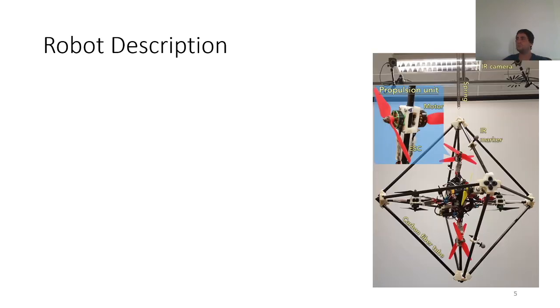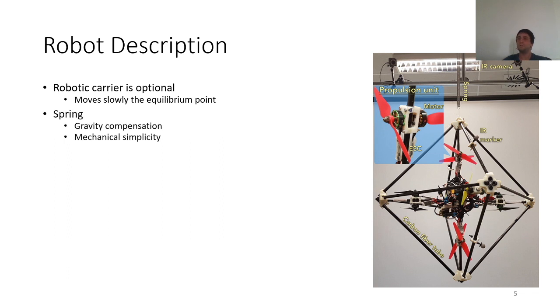Here you can see our first prototype that we built during my first year. Here we are not using a robotic carrier. The robotic carrier is used to move slowly the equilibrium point of the robot to the average position of the current task. But if that doesn't need a large workspace we may not use a robotic carrier. The spring is for gravity compensation but also it brings some mechanical simplicity since we save an additional actuator.